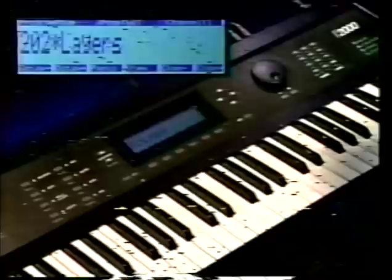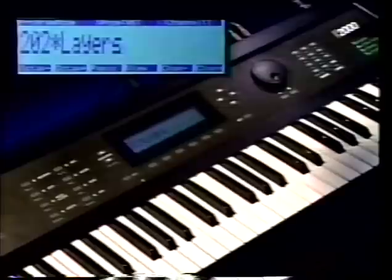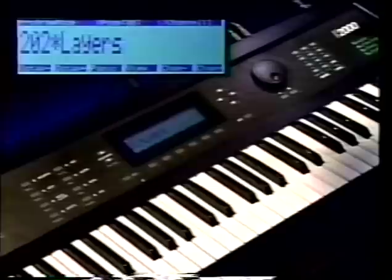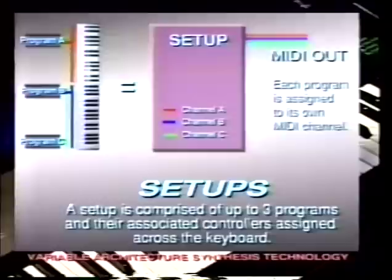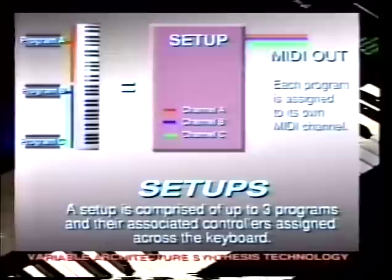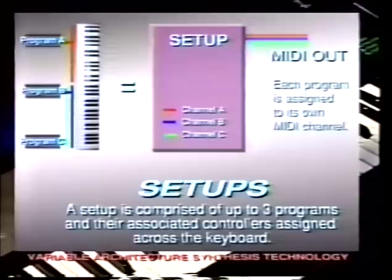Setup mode is perhaps the most powerful mode found on the K2000 because of the thousands of combinations and possibilities. A setup is a MIDI transmission configuration which allows the local keyboard to play three MIDI channels at the same time. These three MIDI zones can play a different program and zones can overlap. In program mode you can have three layers, but the local keyboard can only transmit on one MIDI channel at a time. In setup mode you can have three programs with up to three layers each, creating nine layer timbres where each program transmits on a different MIDI channel.